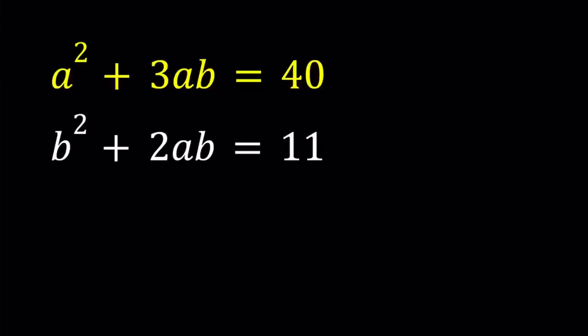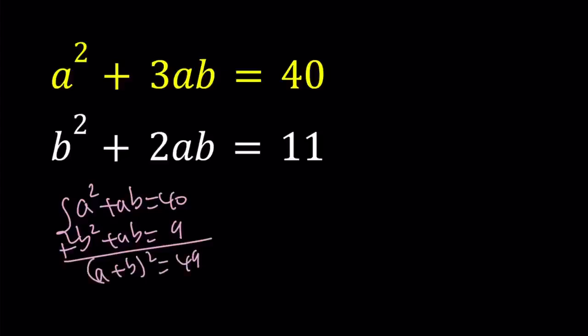If we had something like a squared plus ab equals 40 and b squared plus ab equals 9, it would be super easy. We could add these up and get a plus b quantity squared equals 49, then factor and solve. That would be really easy. This one is more challenging.